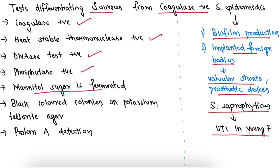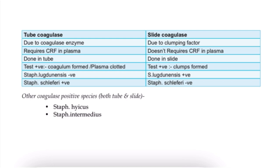Staph. aureus is coagulase positive, heat-stable thermonuclease positive, DNase positive, phosphatase positive, ferments mannitol (yellow colonies), produces black colonies on potassium tellurite, and Protein A is detectable — all differentiating it from coagulase-negative species.